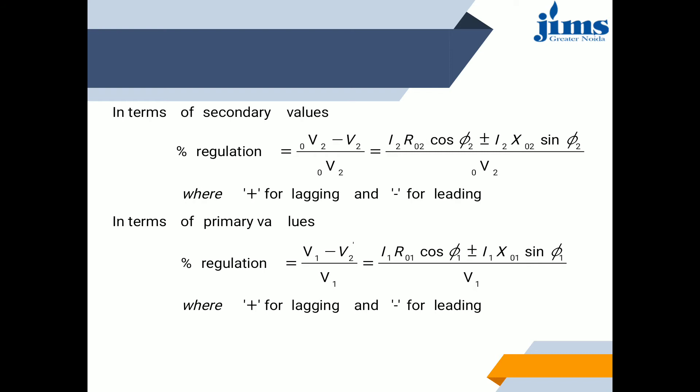The condition for zero regulation: percentage regulation = (I2·R02·cos φ + I2·X02·sin φ) / E2. Regulation will be zero if the numerator equals zero, meaning I2·R02·cos φ + I2·X02·sin φ = 0, which gives sin φ = −R02 / X02. The negative sign indicates that zero regulation occurs at a leading power factor.